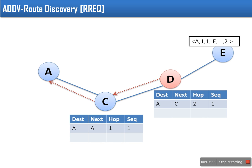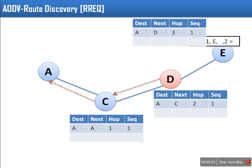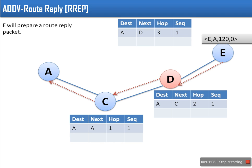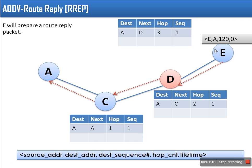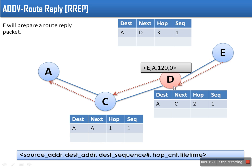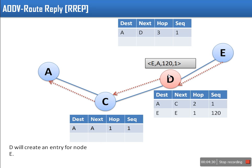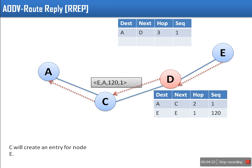On receiving this packet, node E would know that node A is trying to search a path for it. So E will prepare a route reply packet. This packet contains source address, destination address, destination sequence number, and the hop count between this node and the node handling the request. E will send this packet to its neighbors. D acts as a normal node at this time also, and will forward this packet according to its routing table to C.